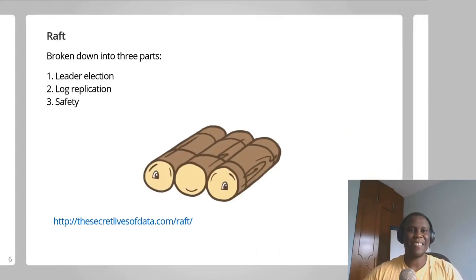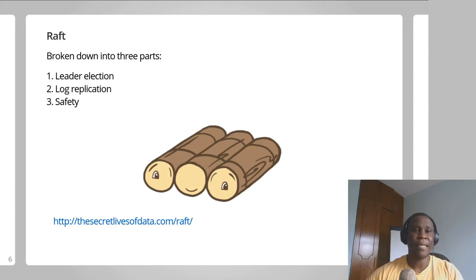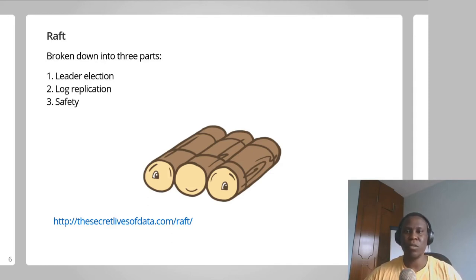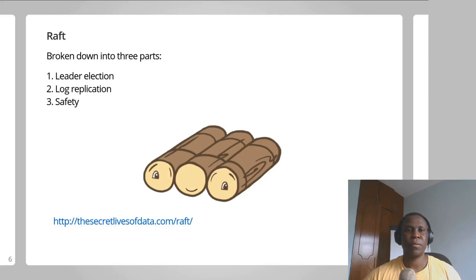So how does Raft work? The Raft algorithm is broken down into three parts. The first part is leader election, where the nodes in a cluster elect one of them to be their leader. The second part is log replication, which handles how commands are gotten from the clients, sent to the nodes in the distributed system, and finally safely applied to the nodes' state machines. The third part, called safety, deals with how to handle certain edge cases during leader election and log replication.